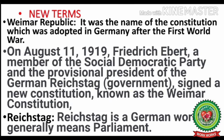Let us first understand the new terms of the topic. The Weimar Republic was the name of the constitution adopted in Germany after the First World War. On August 11, 1919, Frederick Ebert, a member of the Social Democratic Party and the provisional president of the German Reichstag — Reichstag being the name of the German parliament — signed a new constitution known as the Weimar constitution, named after the city of Weimar where it was set up.